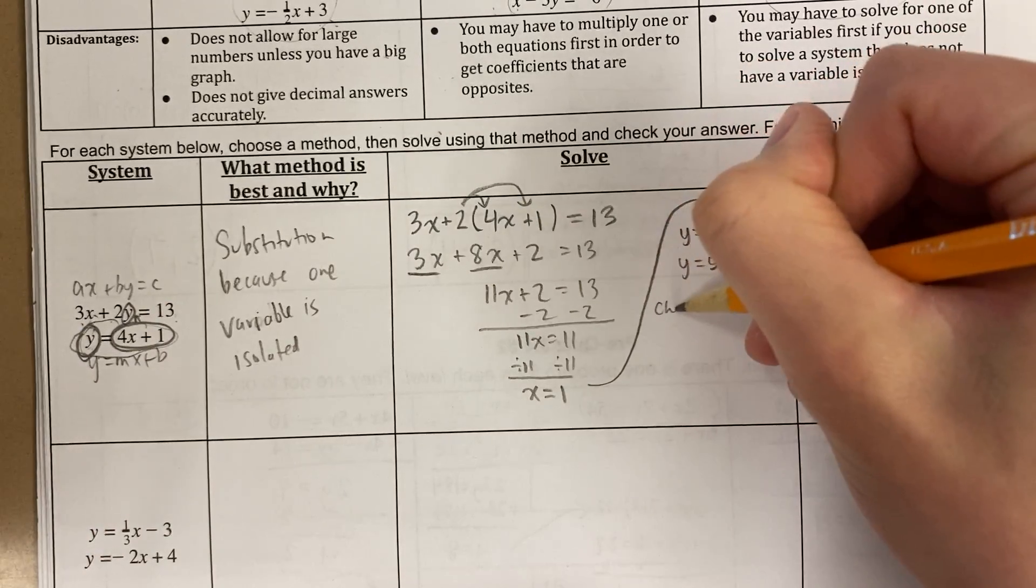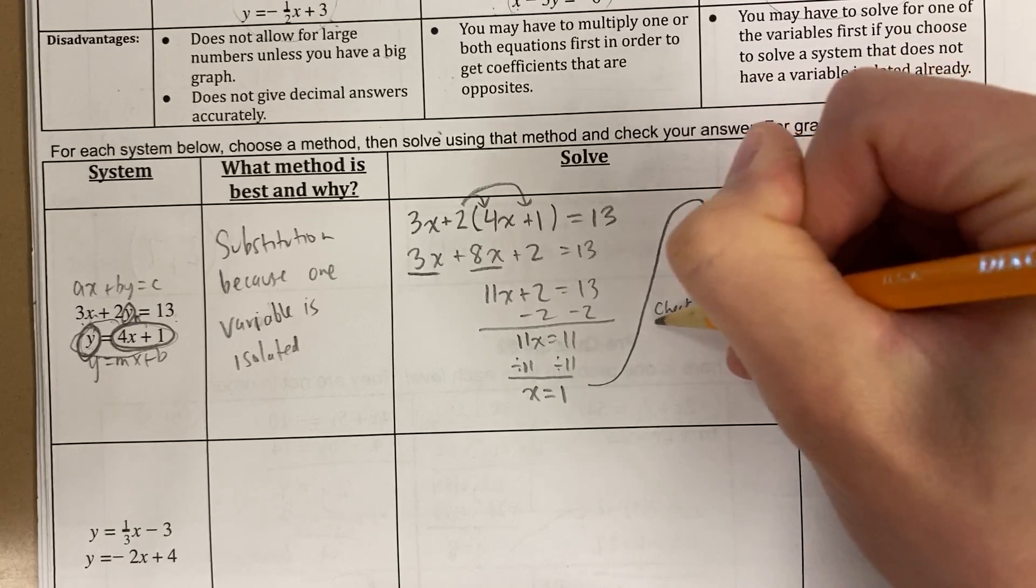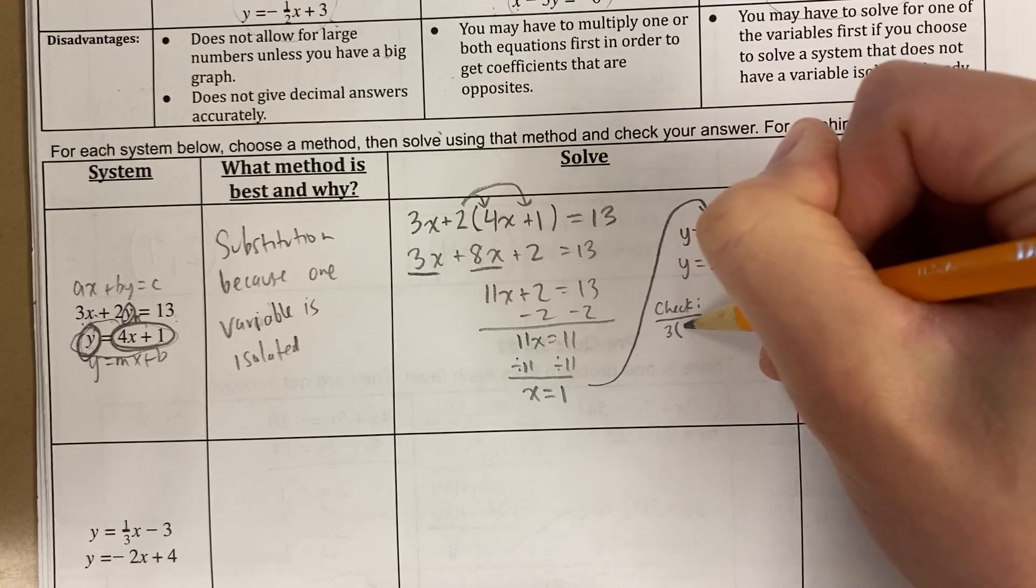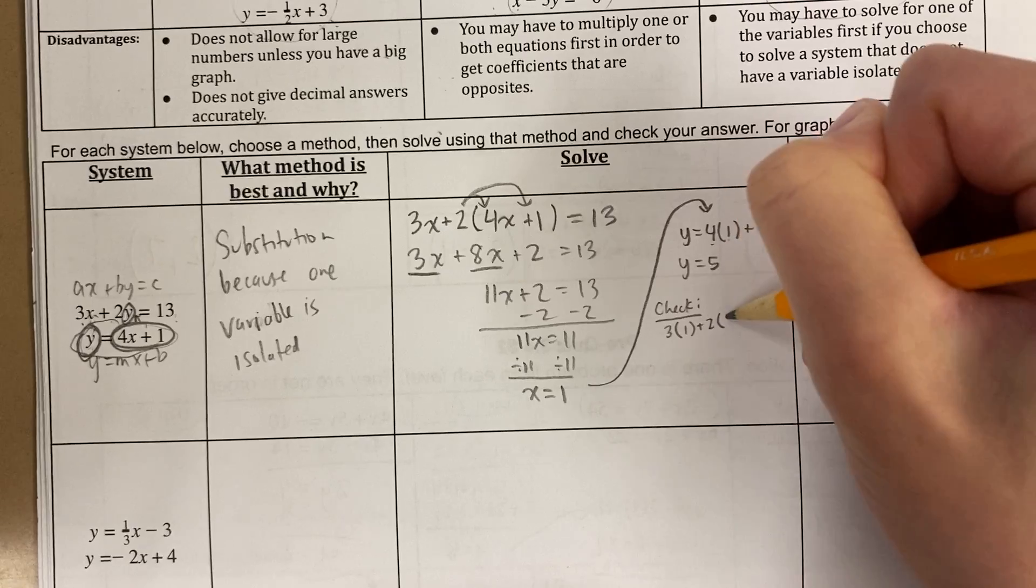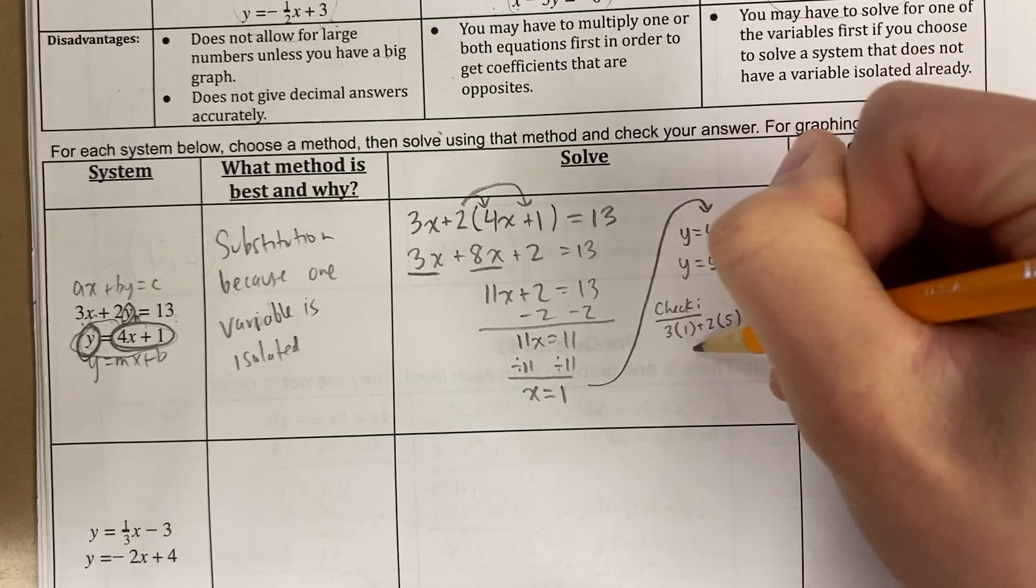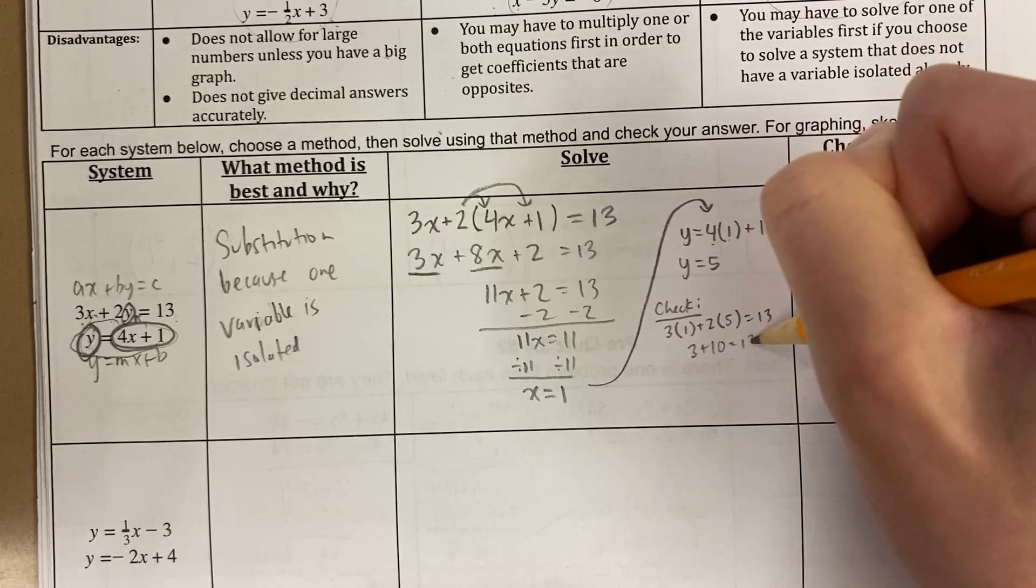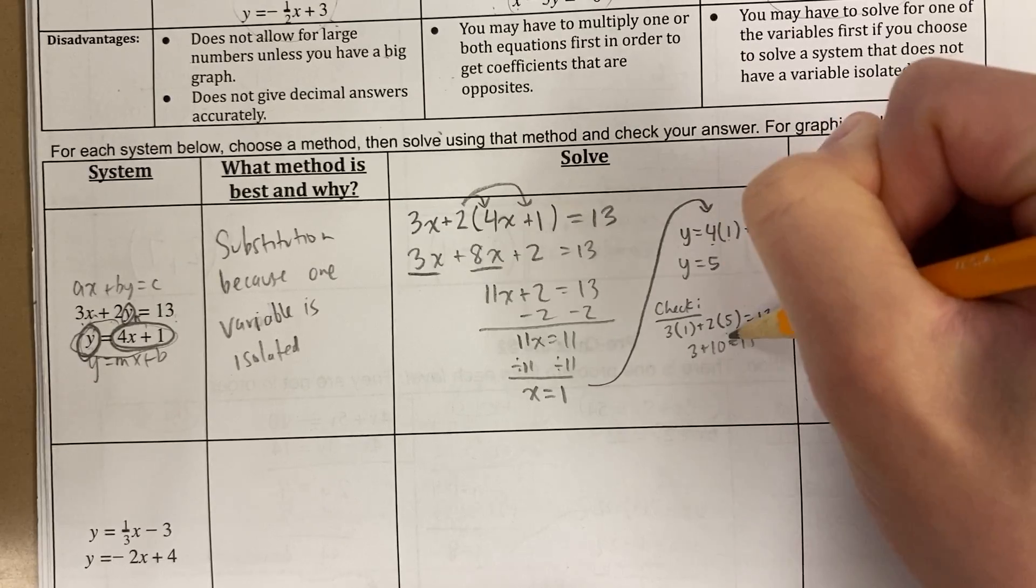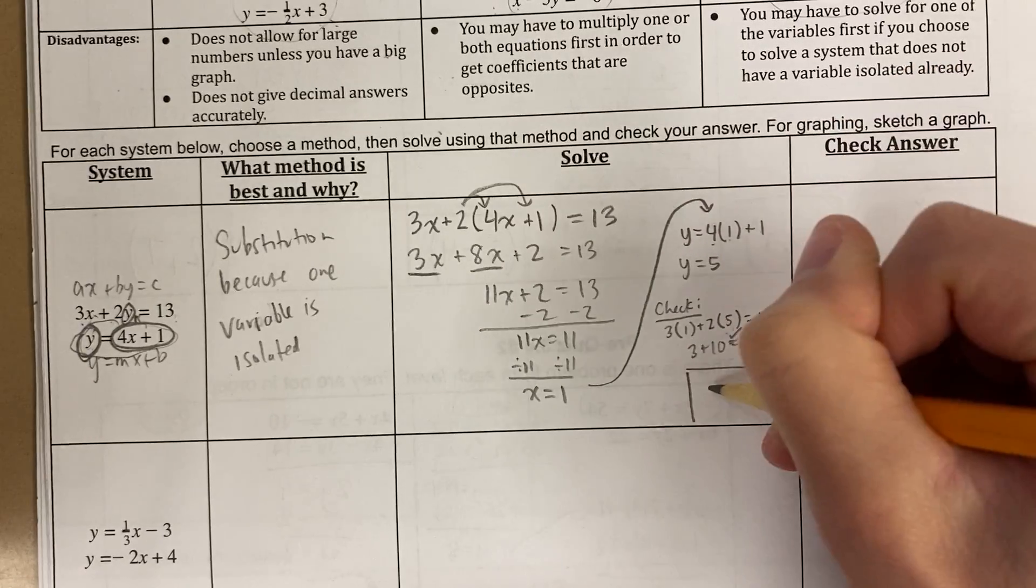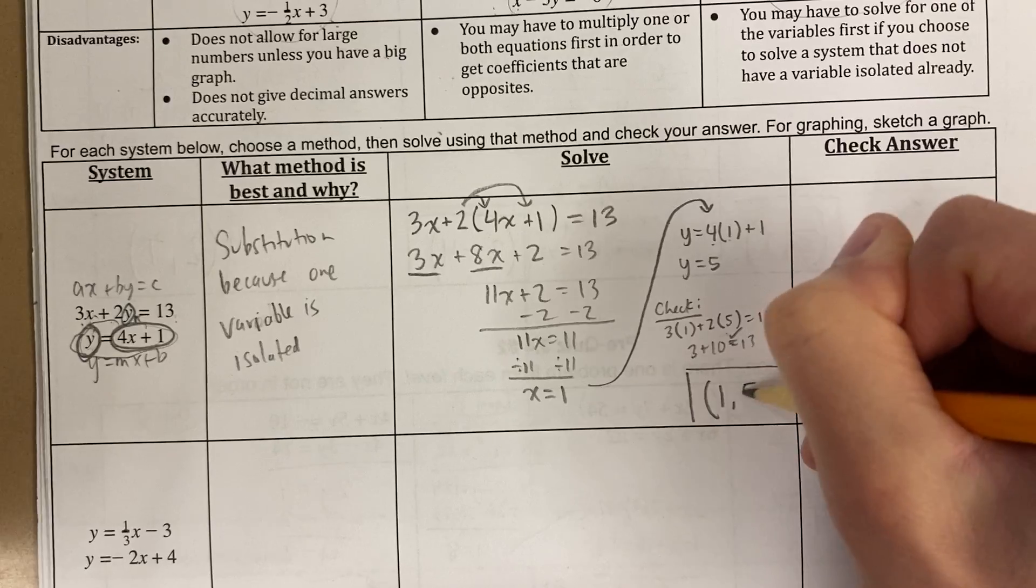You can check it in the other equation. Let's check it in the other equation. So that looks like this. 3 times x plus 2 times y equals 13, and is that true? 3 plus 10 is 13. Looks good.